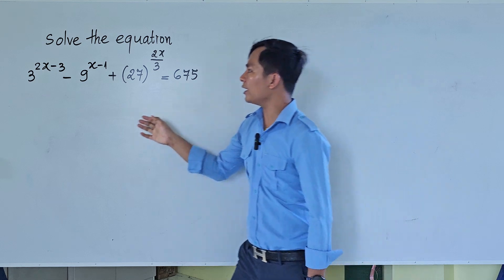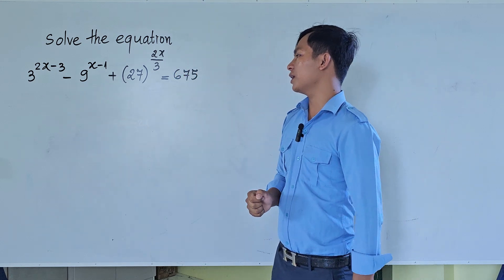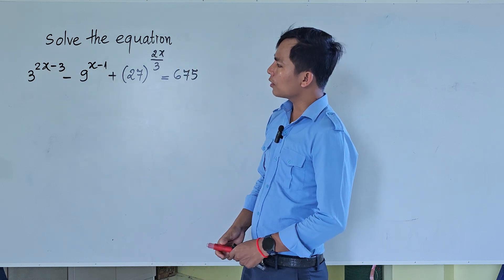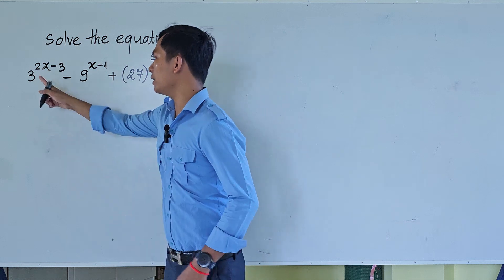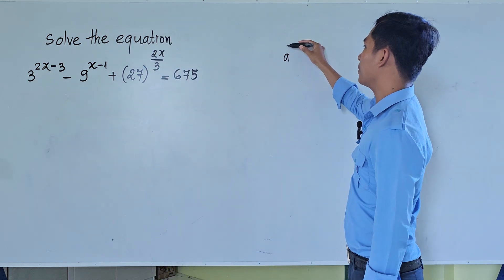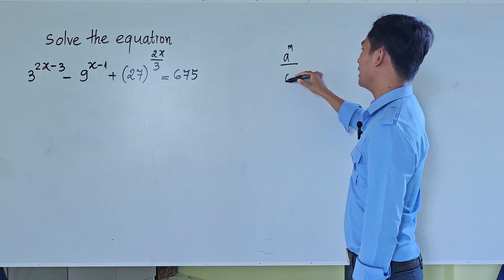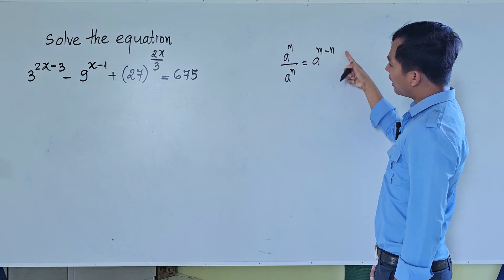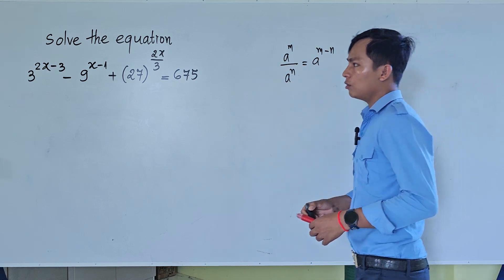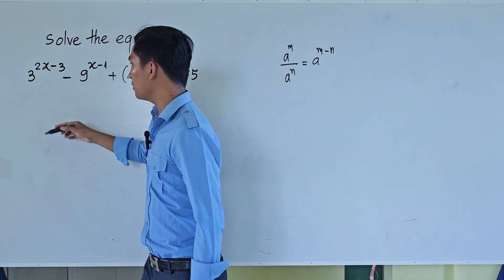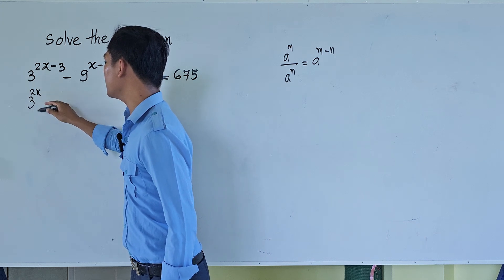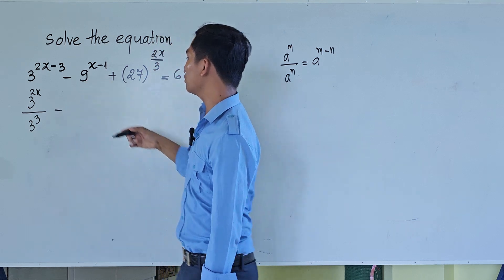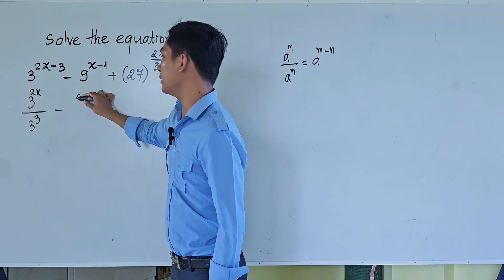Now let's go to the solution together. Our equation has 9 to the power 2h. We can use the formula: a to the power m divided by a to the power n equals a to the power m minus n. So I can rewrite this as 3 to the power 2h divided by 3 to the power 3, and using that formula we simplify the terms.